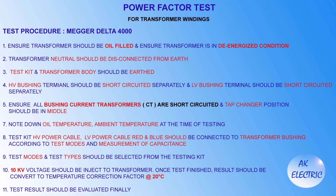Ensure the transformer is oil filled and in a de-energized condition. The transformer neutral should be disconnected from earth. The test kit and transformer body should be earthed. HV bushing terminals should be short-circuited separately and LV bushing terminals should be short-circuited separately. Ensure all bushing current transformers are short-circuited and the tap changer position should be in the middle. Note down oil temperature and ambient temperature at the time of testing.